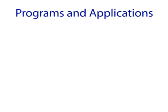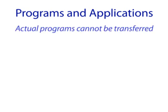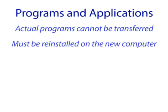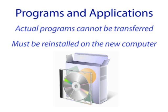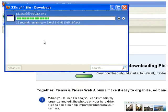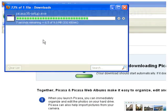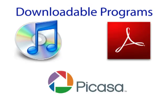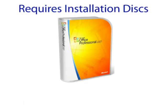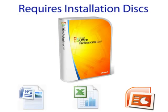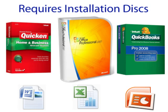Programs and Applications: It's important to keep in mind that when you move to a new computer, your programs cannot be transferred without actually installing them on the new computer. This can either be done with the existing installation CDs or DVDs you may have, or from downloading the program from the internet. A few examples of downloadable programs would be iTunes, Adobe Reader, or Picasa. Programs such as the Microsoft Office Suite and Quicken or QuickBooks usually need to be installed using their installation disks.